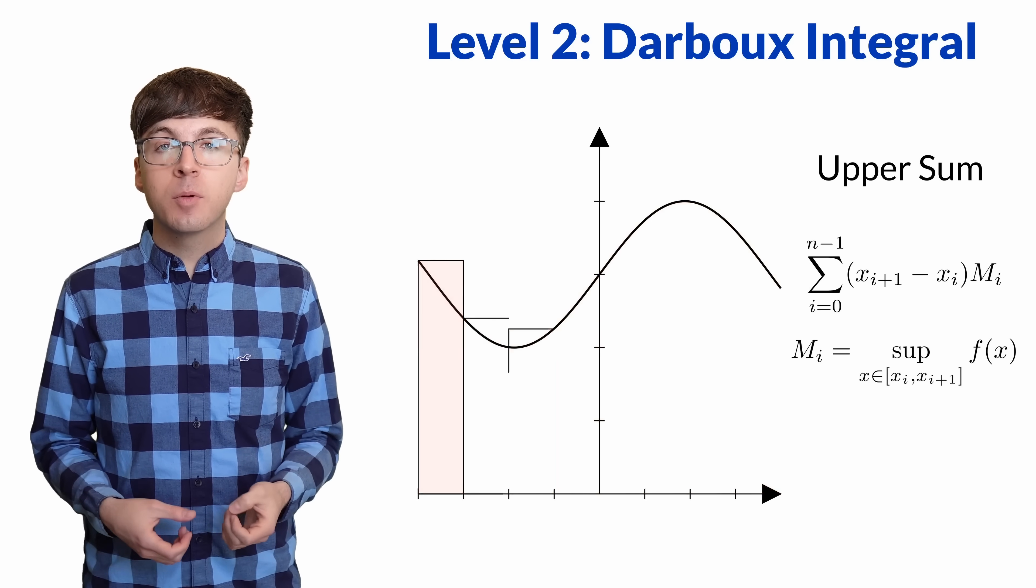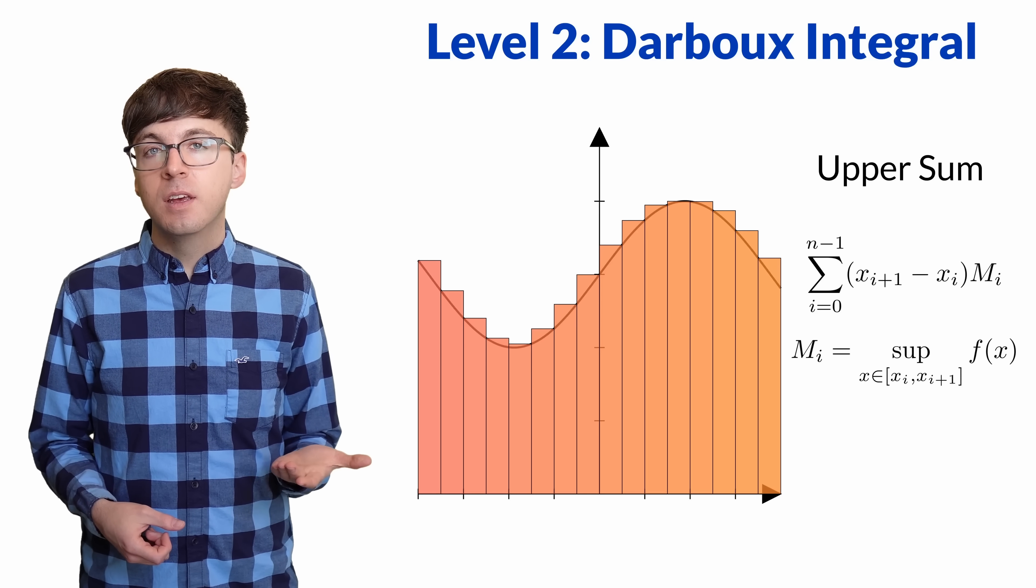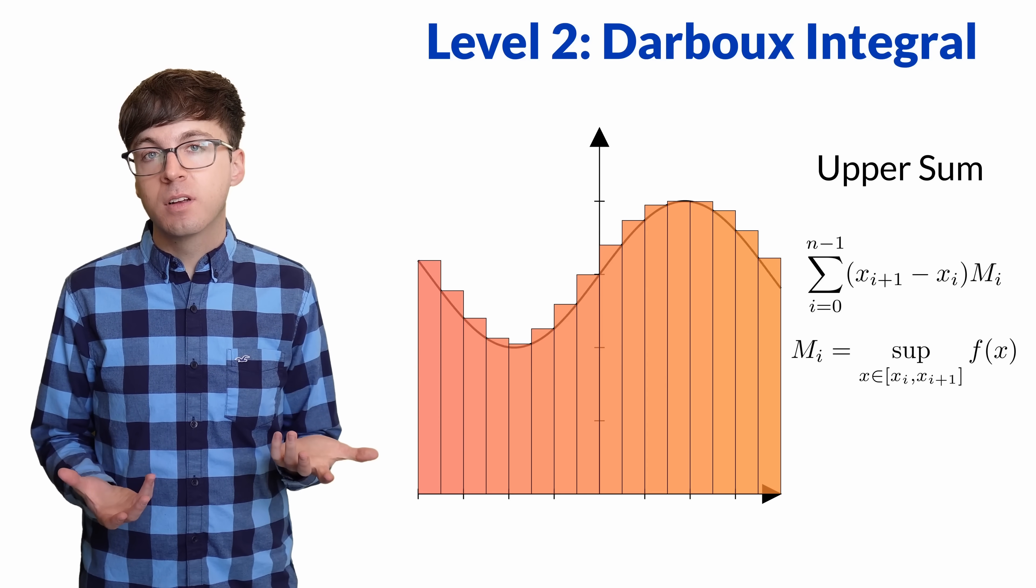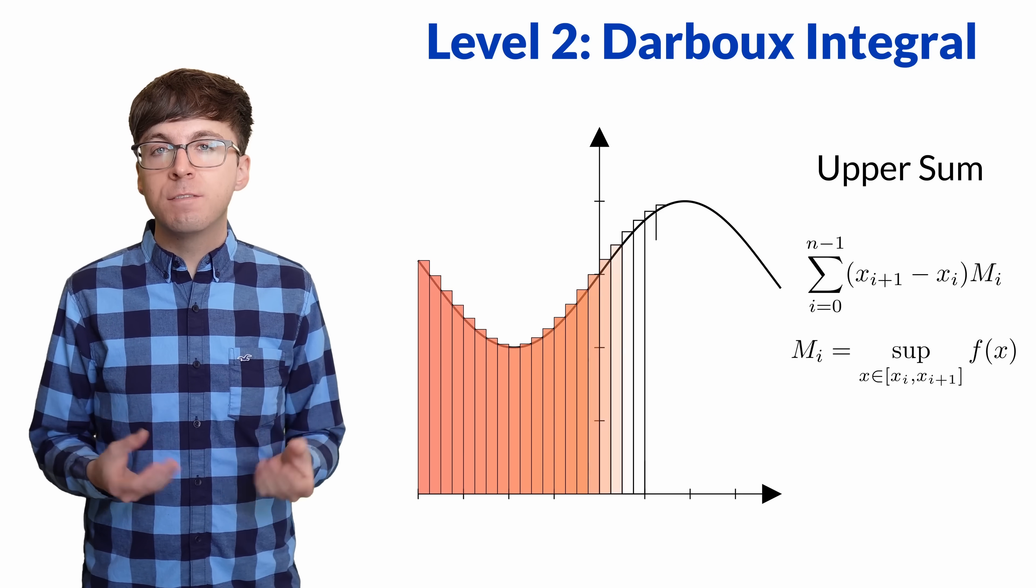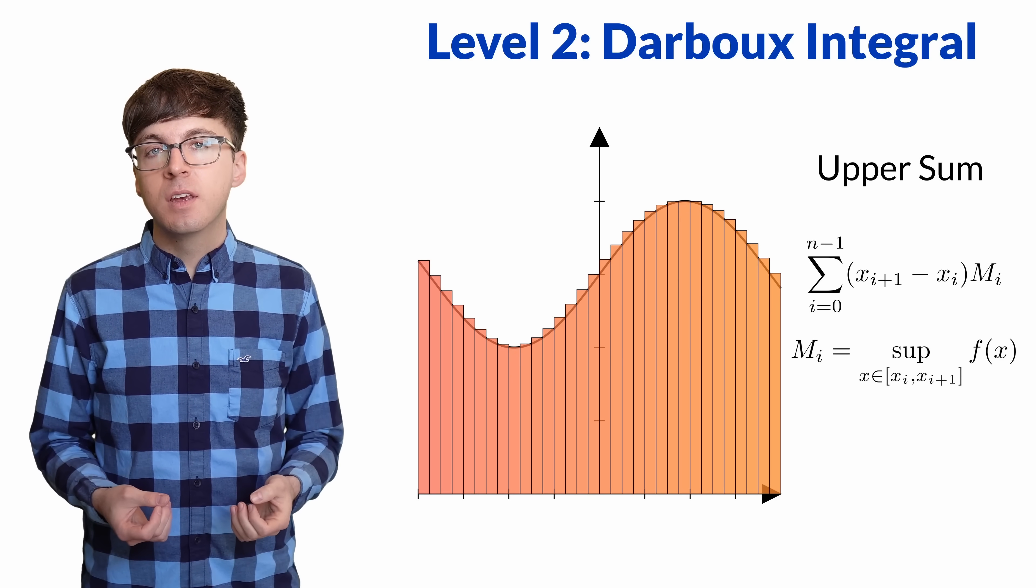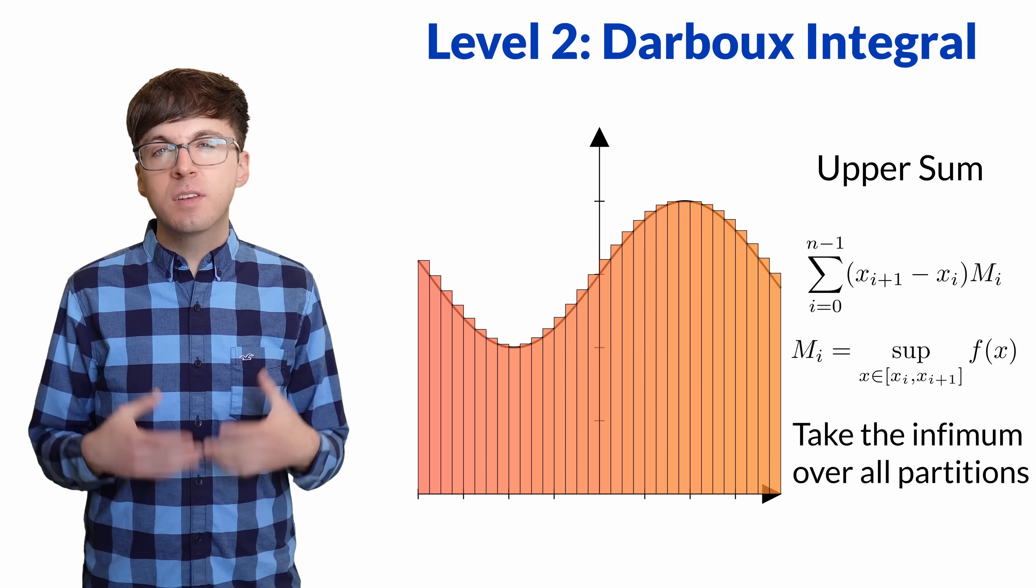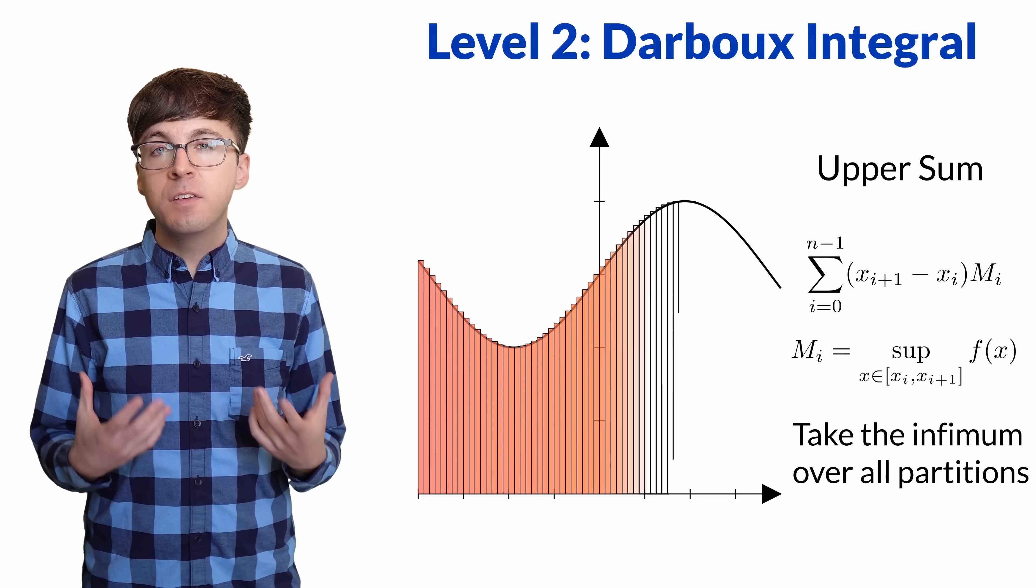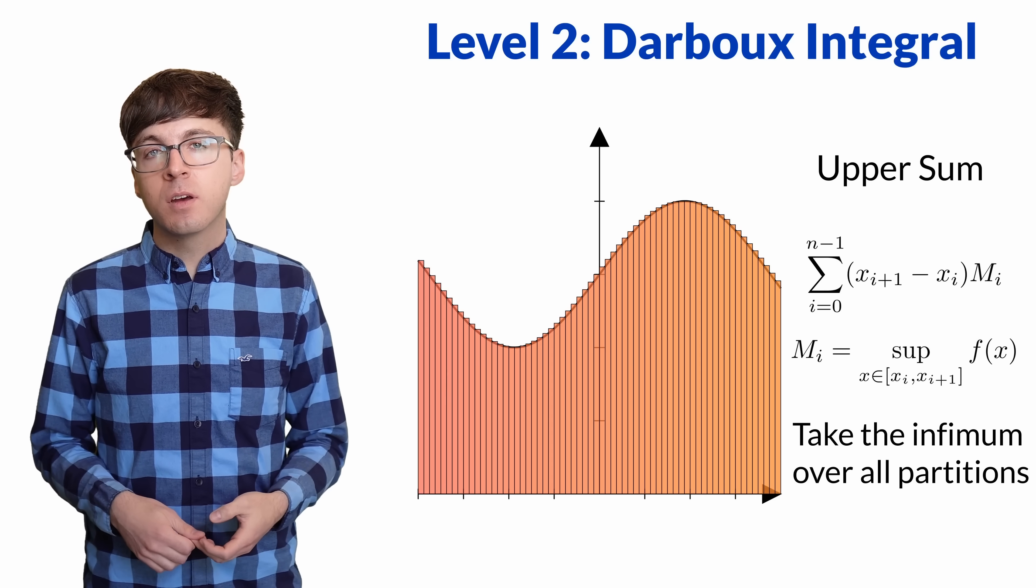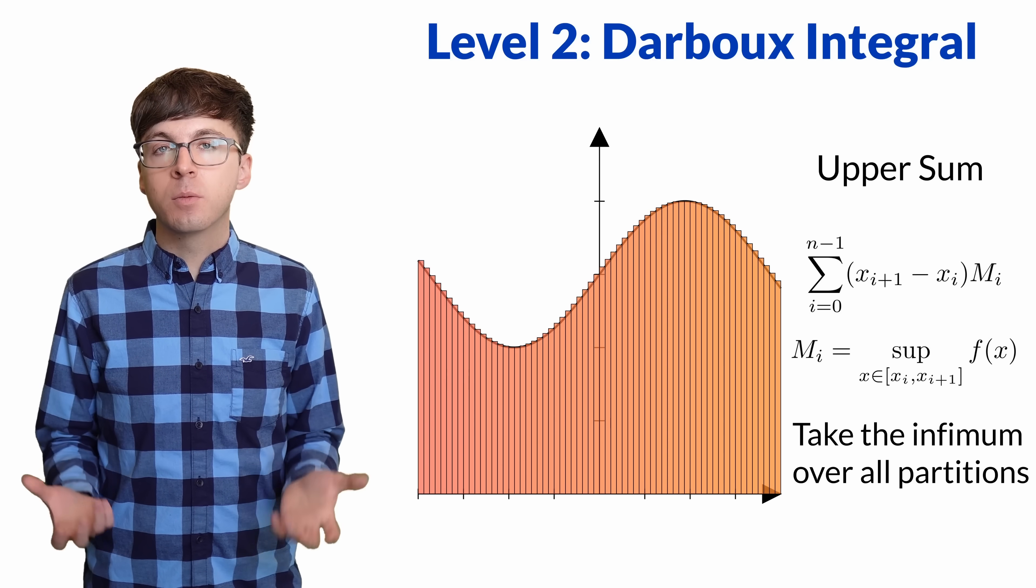For the upper Darboux sum, the height of each rectangle is equal to the supremum of f on that subinterval. To get a more accurate upper bound, we can refine our partition to have more rectangles. This makes the upper bound smaller. We want to make the upper bound as small as possible by taking finer and finer partitions. This is taking the infimum over all partitions. This captures the idea of making the upper bounds as small as we can. Taking the infimum of the upper Darboux sums over all these possible partitions, we get the upper Darboux integral.